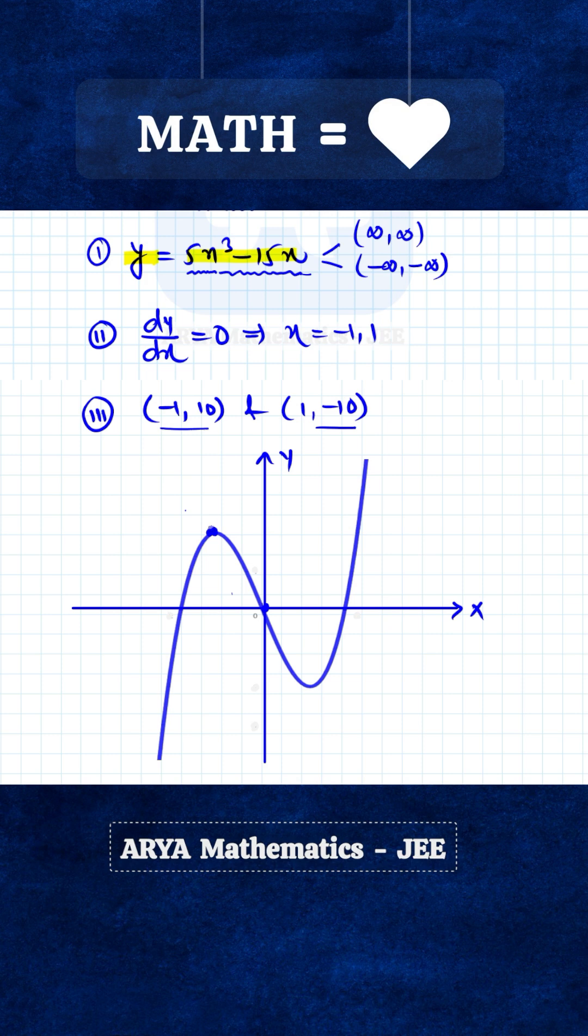Now these two turning points: this point will be x-coordinate minus 1, y-coordinate plus 10, and this point is x is plus 1, y is minus 10. So this is the graph of the cubic polynomial 5x³ - 15x.